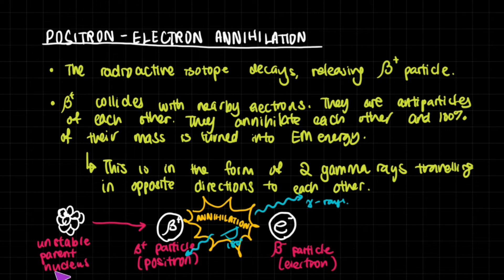Positron-electron annihilation results in two gamma rays traveling in opposite directions to each other. This is probably because of the conservation of momentum. So something like this goes on where you have an unstable parent nucleus, and in our case, this is fluorine-18. This produces a beta plus particle, which is also known as a positron. It collides with a nearby beta minus particle, an electron, and they annihilate each other, releasing gamma rays in opposite directions, which means 180 degrees to each other. This is a pretty important fact that you might want to memorize.